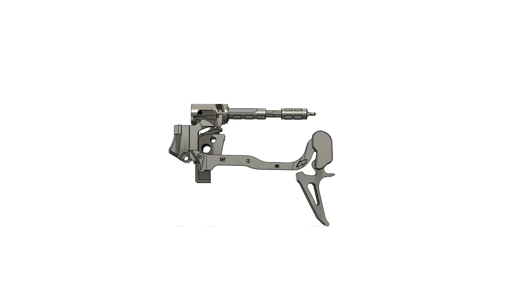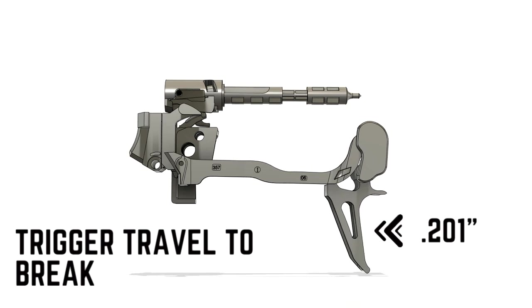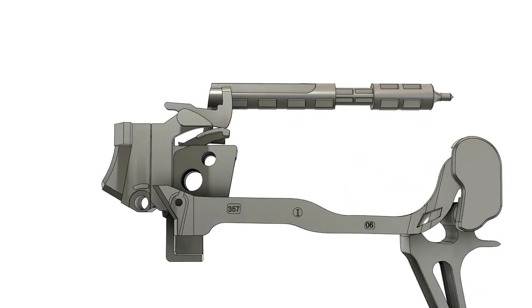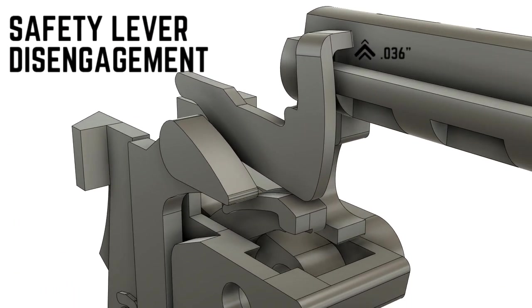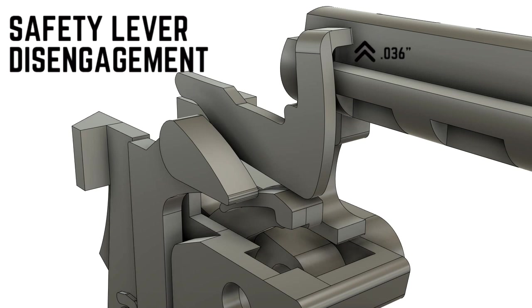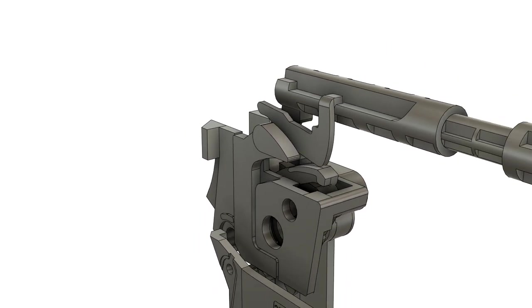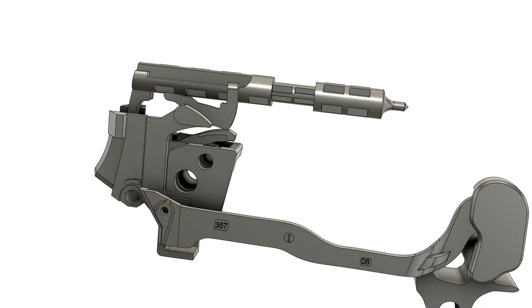So here's what we saw today. The total trigger travel from rest to brake measured in at about 0.201 inches. And the total distance that the safety lever moves before disengaging is 0.036 inches. So the trigger has to travel about five and a half times the distance that the striker safety has to travel in order to discharge.